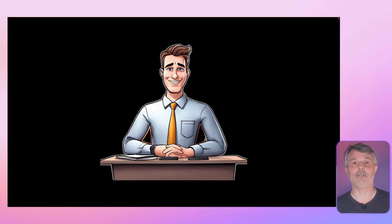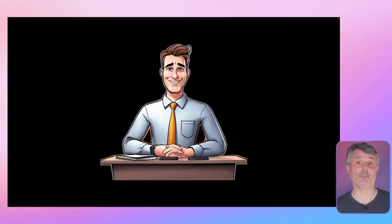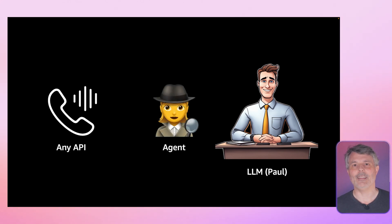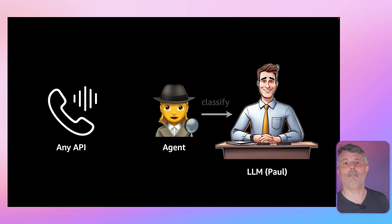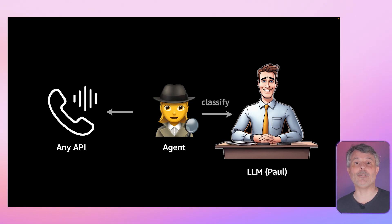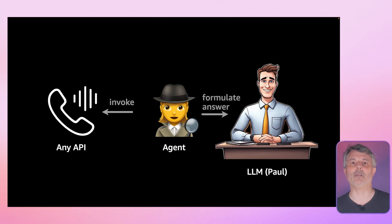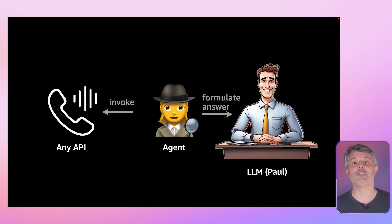What if, instead of searching for existing documents in a library — a vector database — we can call arbitrary code or APIs to retrieve or change information? This is the last technique I want to share with you: agents. The agent is a piece of code that has a set of tools like APIs or functions. It will use the foundation model to select the best tool to answer a question, and ask the model to find a match with the parameters of the API it can use. Once the API and its parameters are identified, the agent calls the API and gives the answer back to the model to formulate a response.